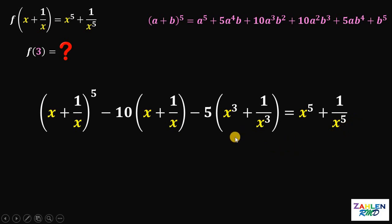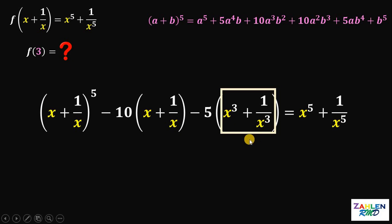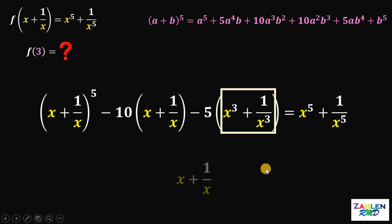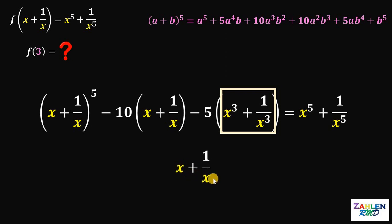Notice that on the left-hand side we have an expression not written in terms of (x + 1/x), because we have x^3 + 1/x^3. So what we're going to do is rewrite x^3 + 1/x^3 in terms of (x + 1/x). We'll start again with (x + 1/x) and raise it to the third power.